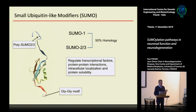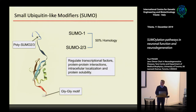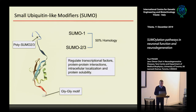They're structurally very similar. Sequence divergence between SUMO 1 and SUMO 2/3 is about 50%. SUMO 2 and 3 are virtually identical — their difference is only five residues. They are unique because they can form polysumo chains, similar to polyubiquitin. And they all have this diglycine motif, which is the activating motif of the C-terminus. In terms of functions, they are best known for cancer biology and tumorigenesis, because they regulate transcription factors.